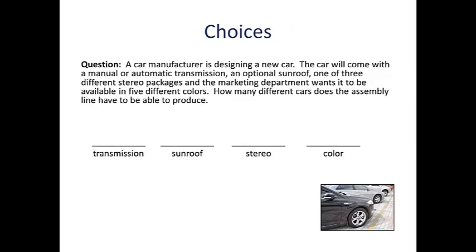The way that I like to arrange this kind of question is by putting a line or a blank for each of the options or each of the choices that we have to make. In this case, we have four decisions for each car: the transmission type, whether or not it has a sunroof, a stereo option, a stereo package, and the car's color.